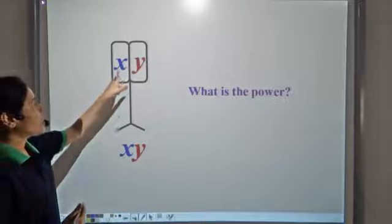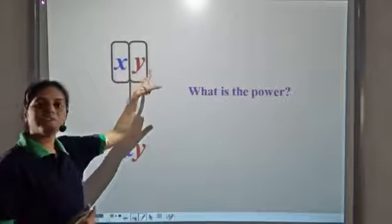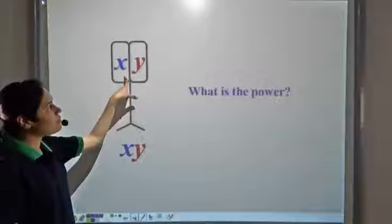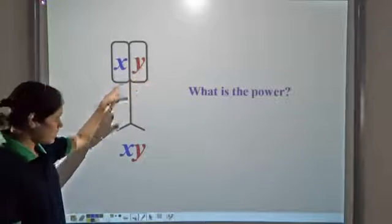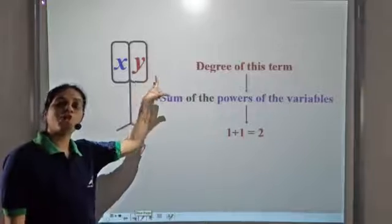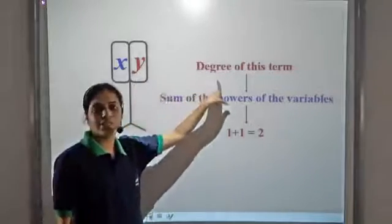Here also, x is multiplied with y. So what is the power? Power will be the combined power of x and y. When we have more than one variable, we do not call it power, we call it degree.